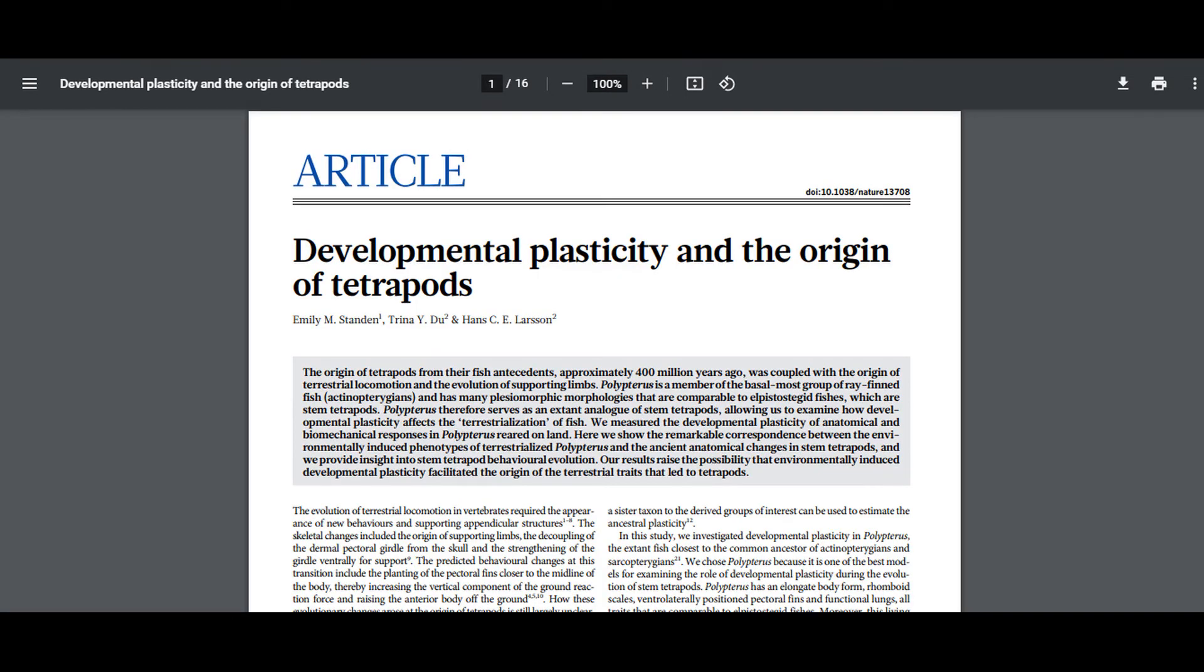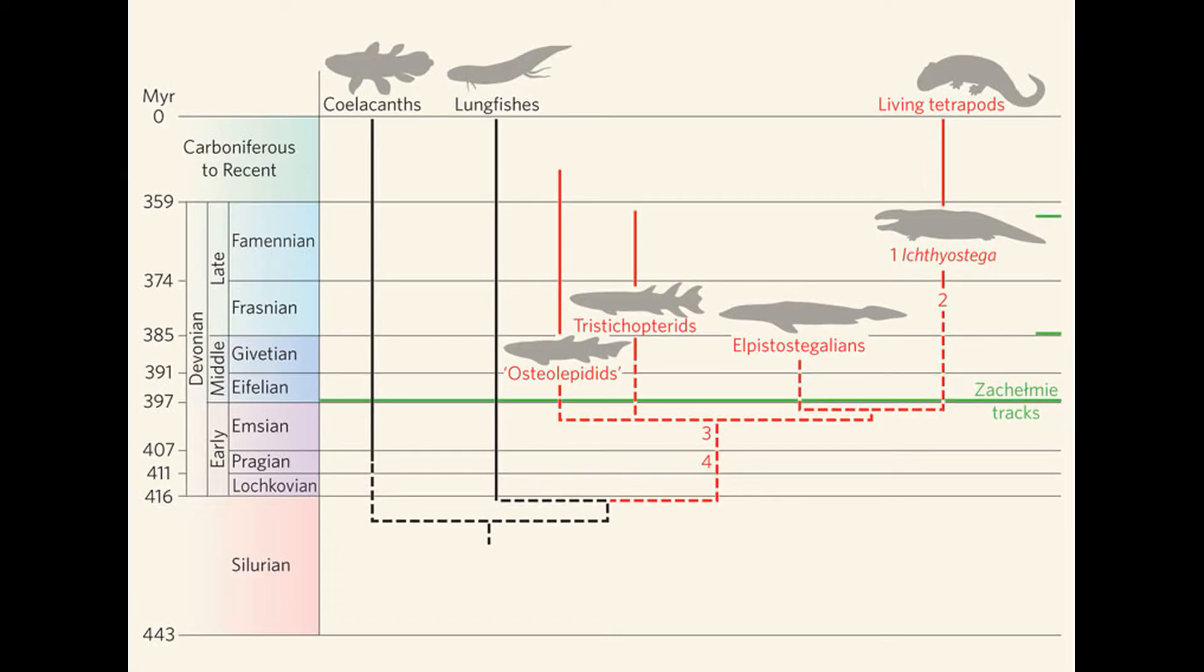Let's jump again, but this time to 2014. Emily Standen and colleagues authored a paper titled Developmental Plasticity and the Origin of Tetrapods. Some 400 million years ago, a group of sarcopterygian fish, also known as lobe-finned fish, made the transition to land. Actinopterygians, also known as the ray-finned fish, and sarcopterygians split in the Silurian, and sarcopterygians radiated in the Devonian. This produced a variety of lineages like the coelacanths, lungfish, osteolepiforms, and, eventually, the tetrapodomorphs.